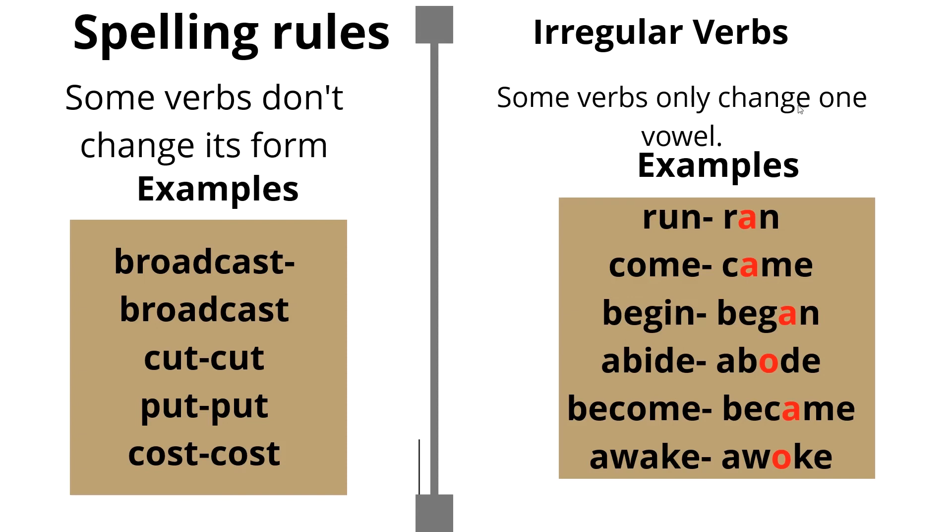Some verbs only change one vowel. For example, run. They have changed the middle vowel, which is U, to A. Run, ran. Come, came. Begin, began. Abide, abode. Become, became. Awake, awoke.